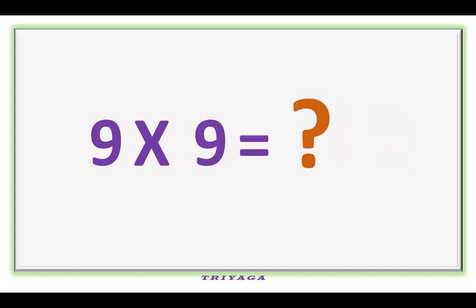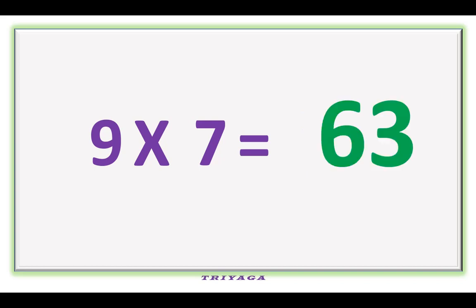9 times 7 is how much? It is 73. 9 times 7 is how much? It is 63.